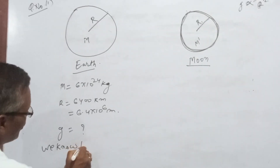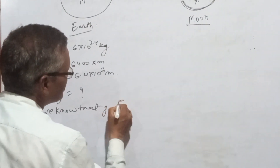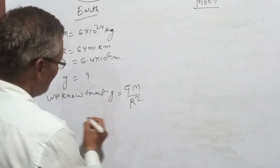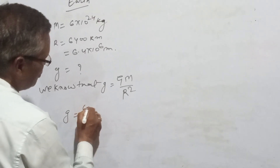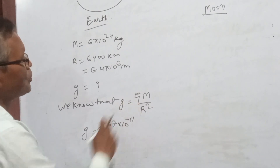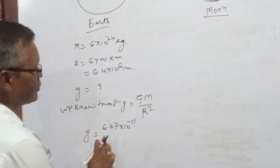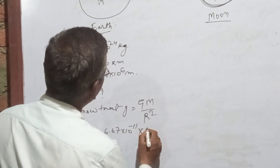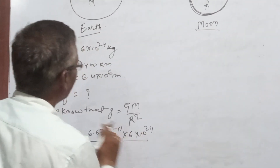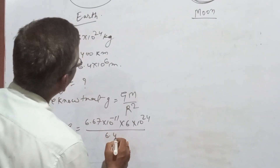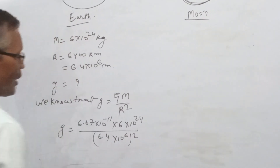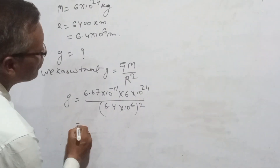We know that g is equal to GM by R squared. We know that g equals GM divided by R squared — this is the formula we will apply.